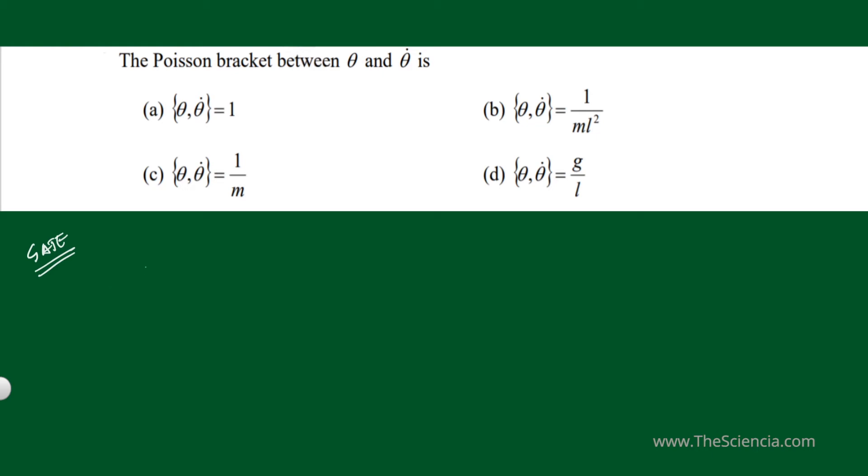I told you the Poisson bracket with a variable and its conjugate will be equal to 1. So here, the variable is theta and its conjugate will be P theta. Is there any way to connect P theta with theta dot?